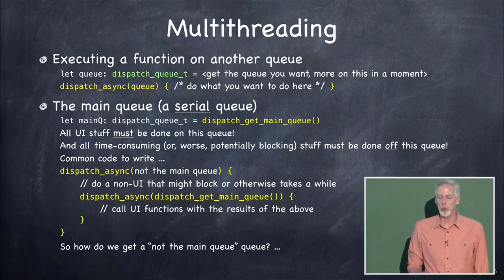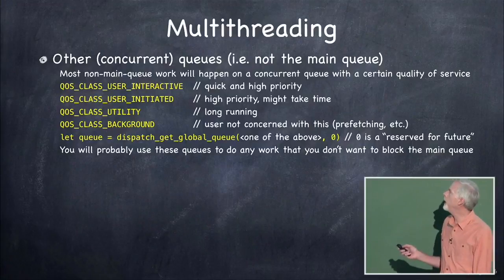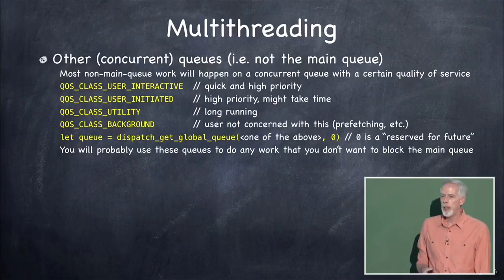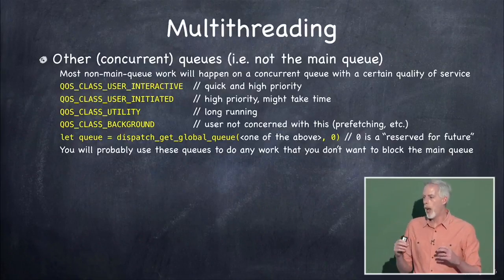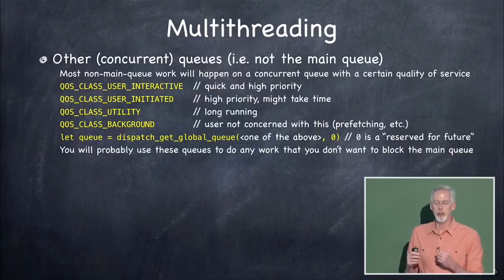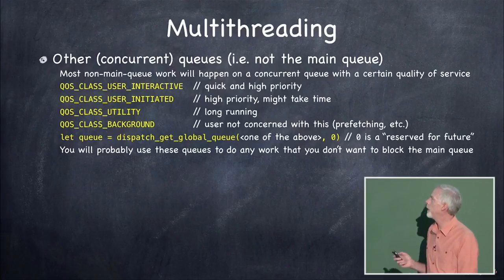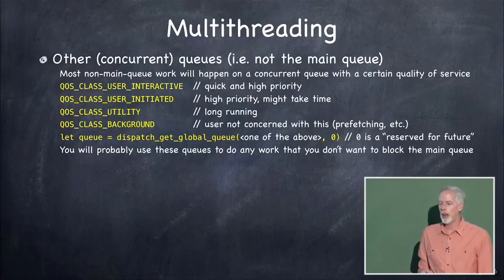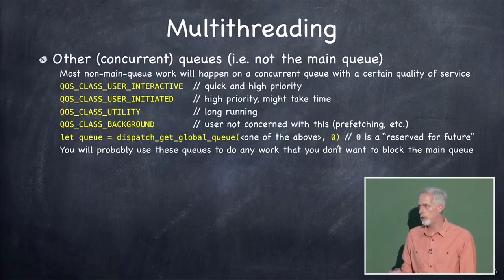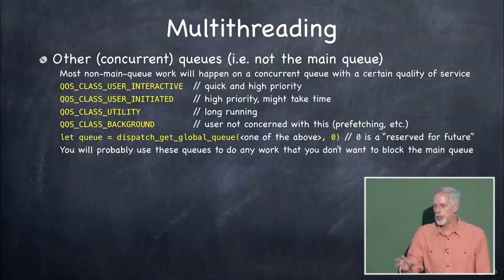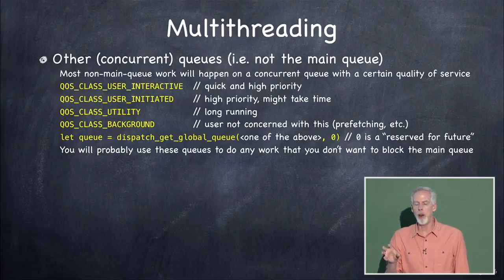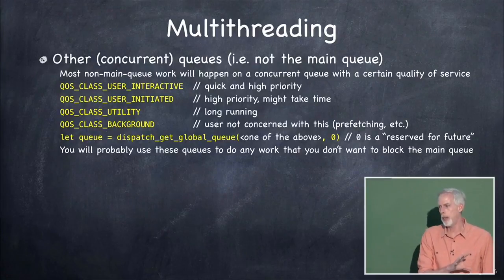How do we get the non-main-queue queues to run something else on? The most common way is to use one of the concurrent queues provided by the system — there are four of them. They each have a quality of service, which is how much attention the system gives to them — you can think of it as their priority. You call dispatch_get_global_queue and specify which one you want. User interactive is very high priority — the user just asked to do something that takes a little time, so I don't want to do it on the main queue, but I need it done as soon as possible.